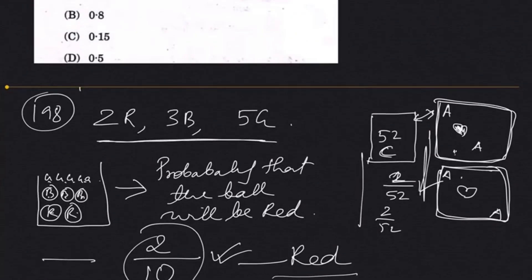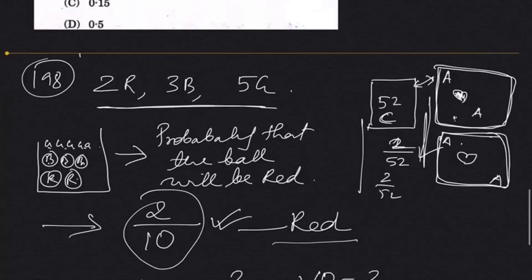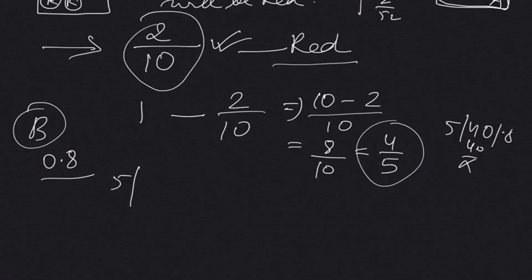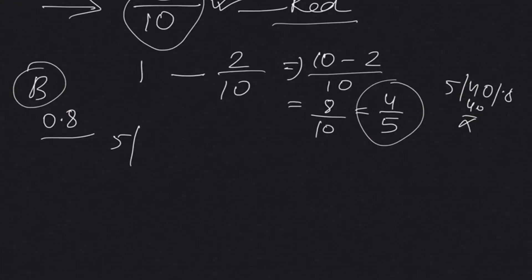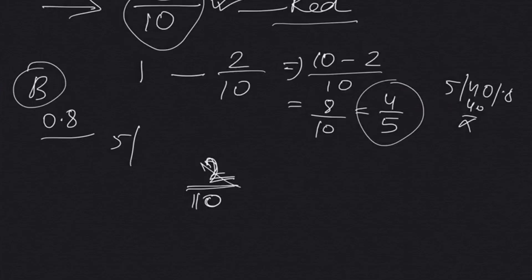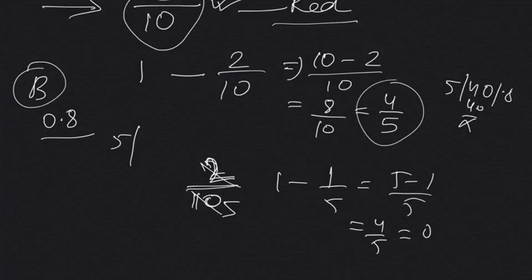That is how you solve it. Even this question — why 30 seconds? Even 10 to 20 seconds. Immediately: total balls = 10, 2 red balls out of 10. Then cancel — 1/5, then 1 minus 1/5 = 4/5 = 0.8. Done in about 10 seconds. So that is question number 198.